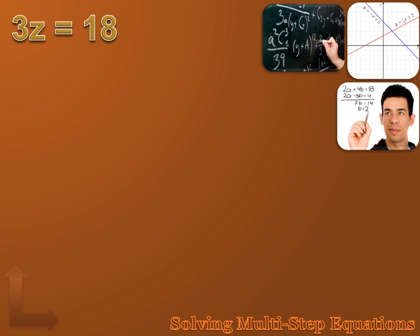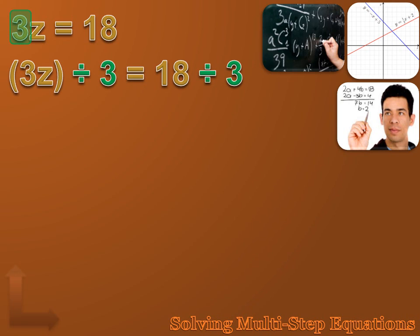In the last lesson, we talked about solving one-step equations, like 3Z equals 18. Hopefully you remember that we're trying to isolate the Z — we're trying to change the expression so it reads Z equals something. In order to get it to say Z equals something, we need to get rid of that 3. That 3 says 3 times Z, so to get rid of it, I want to use the inverse operation — the opposite of multiplying by 3 is dividing by 3. I need to divide both sides of the equation by 3 to keep it equal. I get 3Z divided by 3 equals 18 divided by 3, and when I carry out that math, I get Z equals 6. That's kind of easy — hopefully that makes sense.